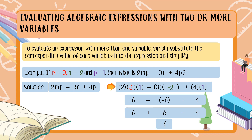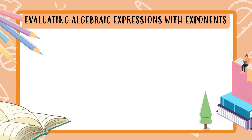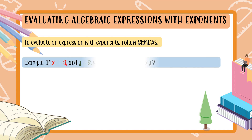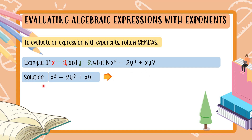Now let us go to evaluating algebraic expressions with exponents. Before we had only variables, but now we have exponents too. To evaluate an expression with exponents, just follow GEMDAS. Example: if x is equal to negative 3 and y is equal to 2, then what is x squared minus 2y cubed plus xy?